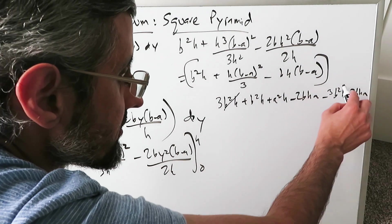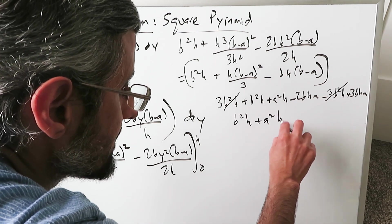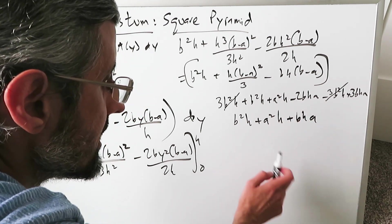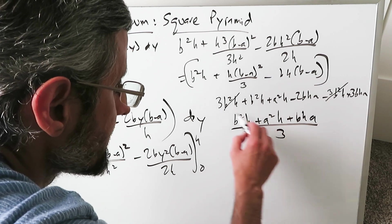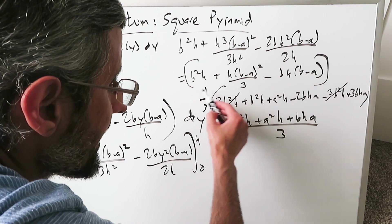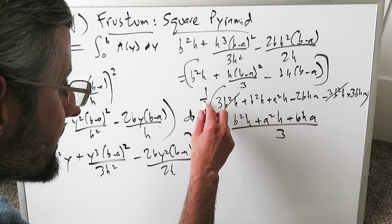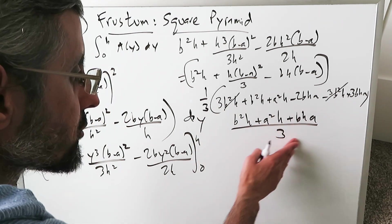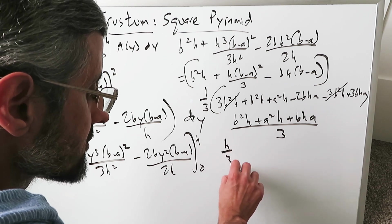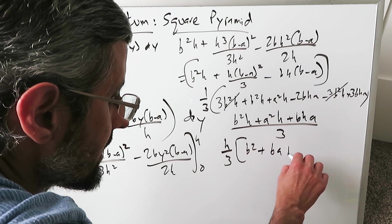3B squared H minus 3B squared H cancel out. I have B squared H plus A squared H minus 2BHA plus 3BHA, which is plus BHA. All of this over 3. I want to isolate H over 3, and what remains: B squared plus BA plus A squared.